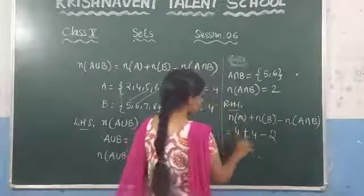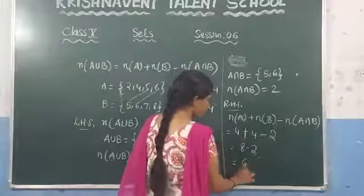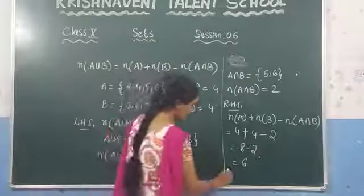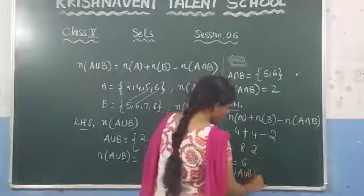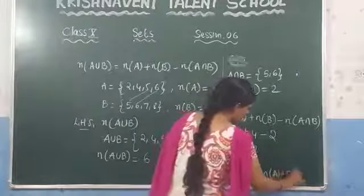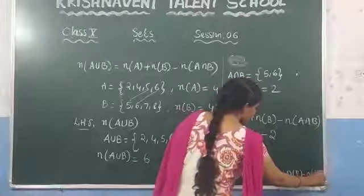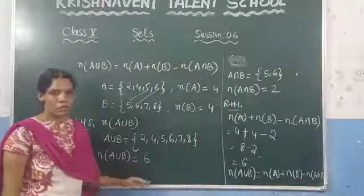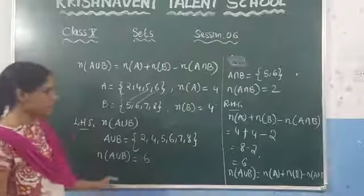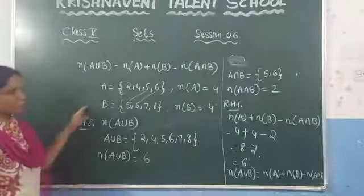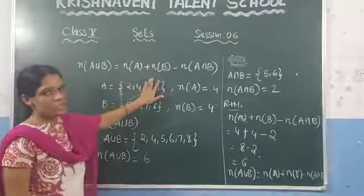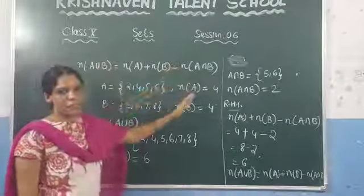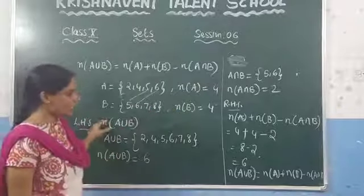We got the value 6 on both sides. This is a very important relation between the cardinality of sets: N(A ∪ B) = N(A) + N(B) − N(A ∩ B). If you have given any two sets and want to verify this relation, just find the number of elements in A ∪ B, A, B, and A ∩ B, and by calculation you can prove the two sides are equal.